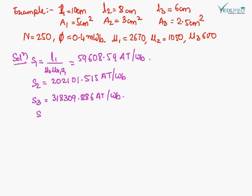So the total reluctance will be S₁ + S₂ + S₃, which is going to be equal to 580019.9912 per weber.